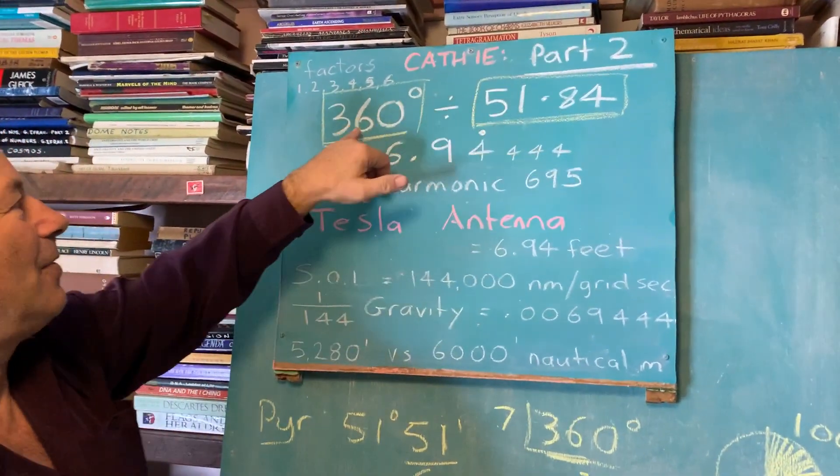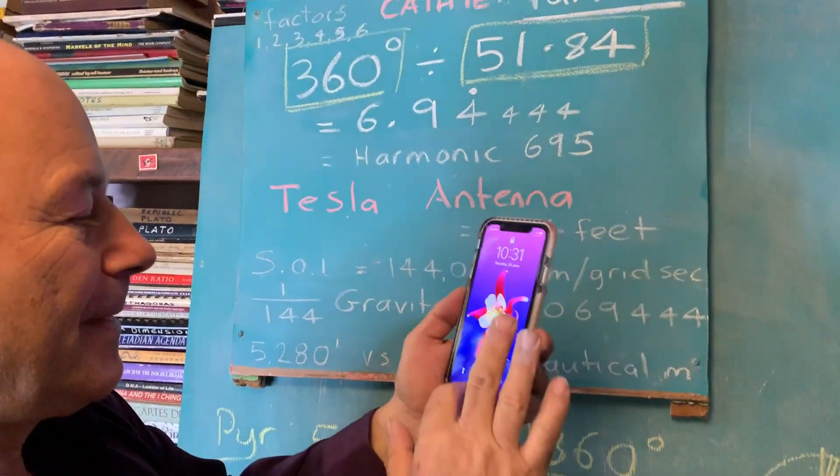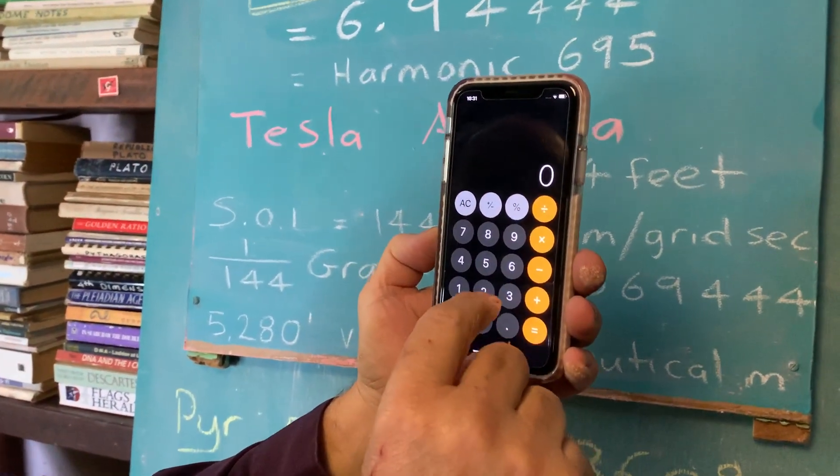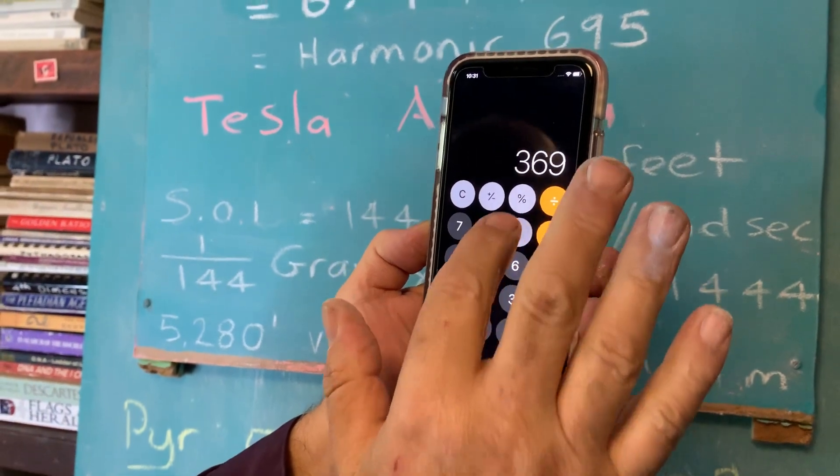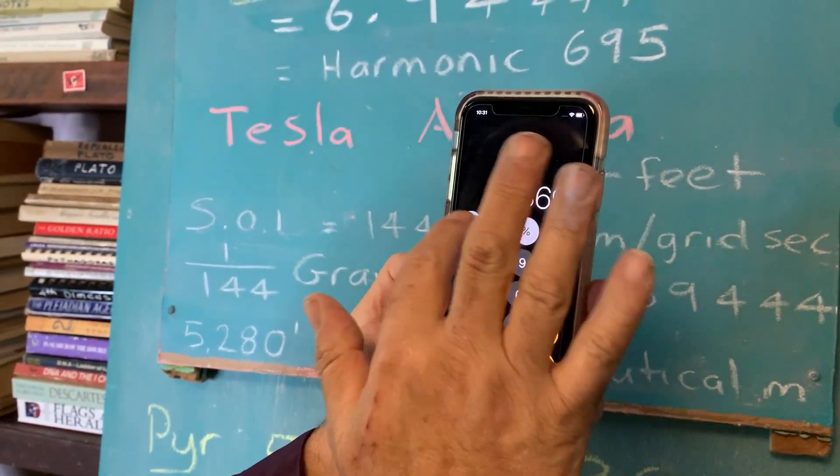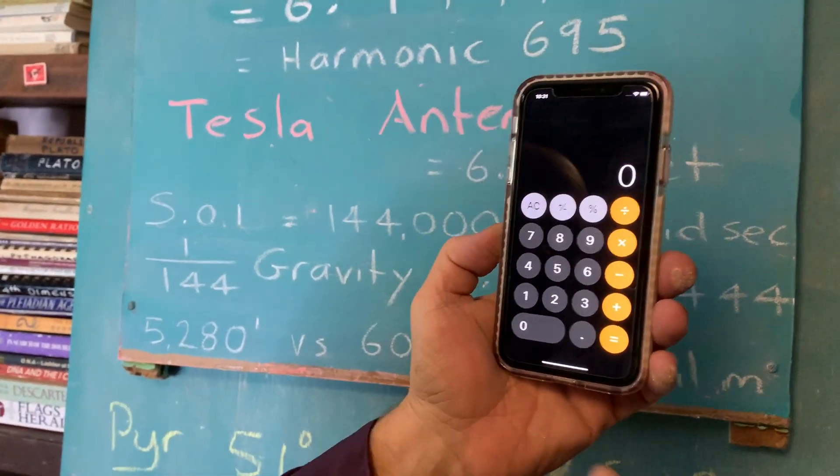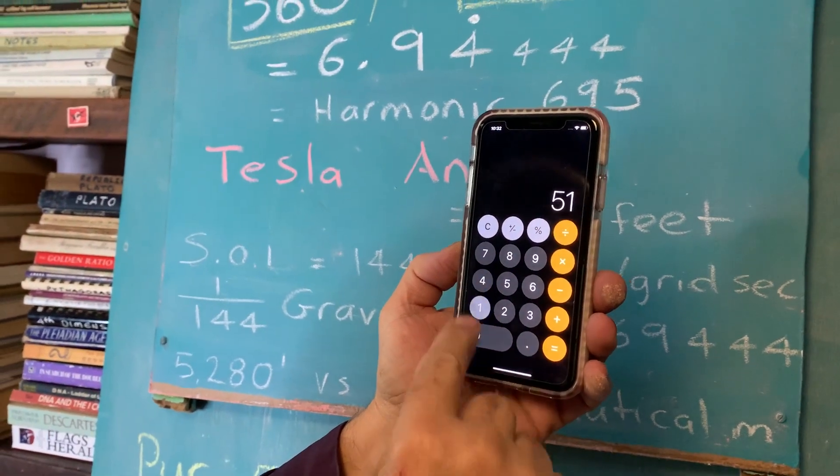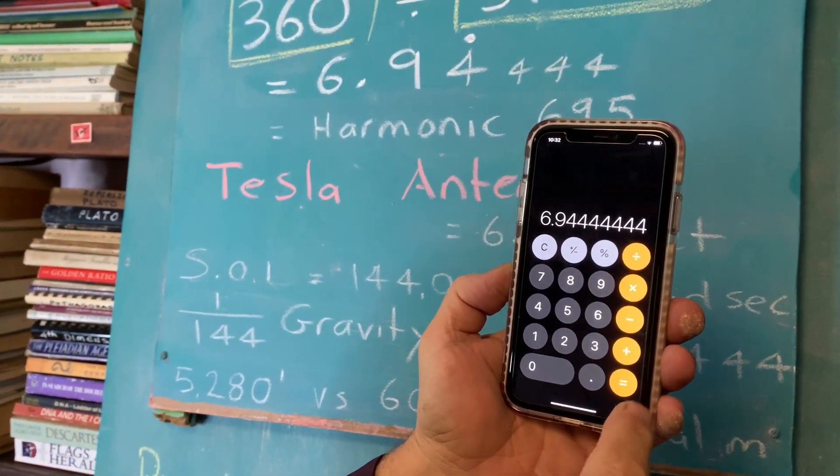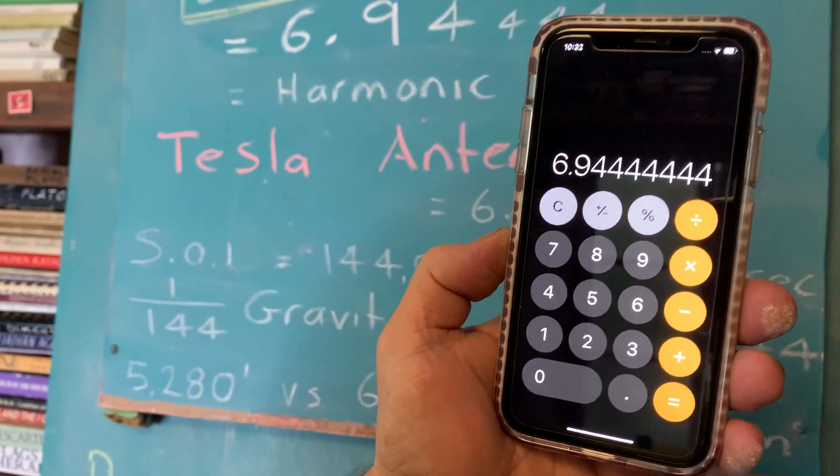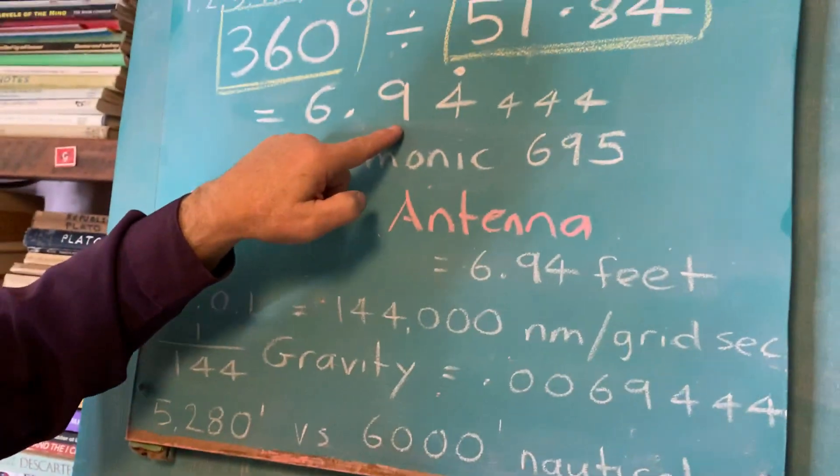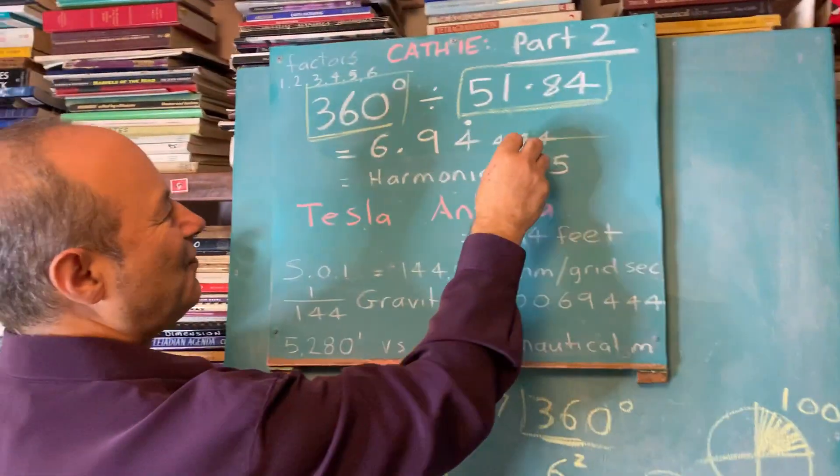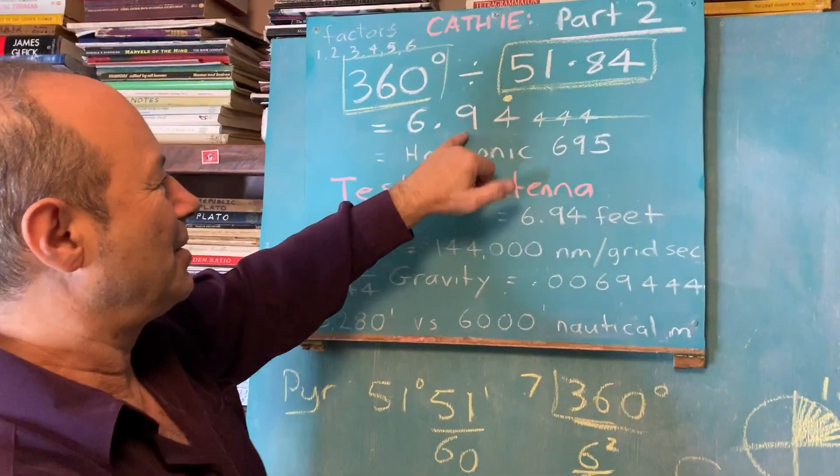We know that 360 is the chosen way of dividing the circle. We're going to divide 51.84 into 360 degrees. Let me get my calculator. So 360 divided by 51.84 equals 6.944444. We call it 6.94 repeater. We can take off all those fours and put a dot above there and say 6.94 repeater.